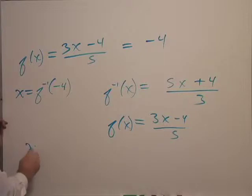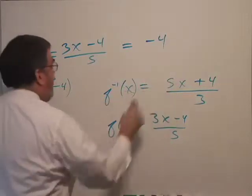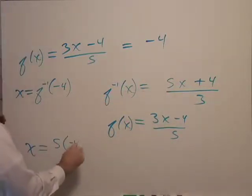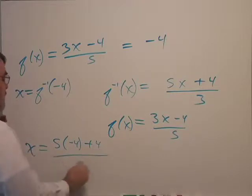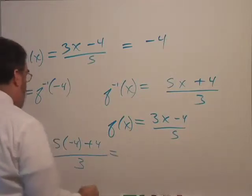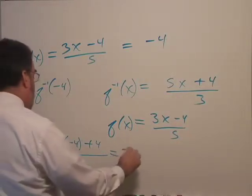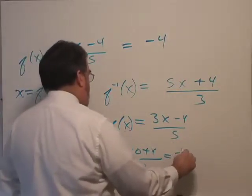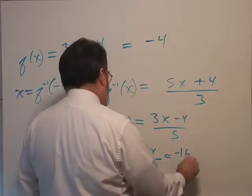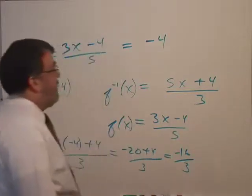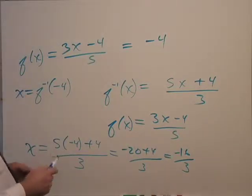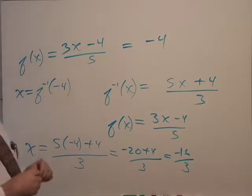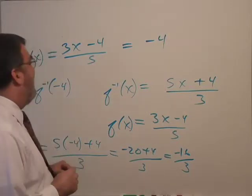And so x would be, using this function, 5 times negative 4 plus 4 over 3. And that equals negative 20 plus 4 over 3, negative 16 thirds. So I bet that's the right answer too.